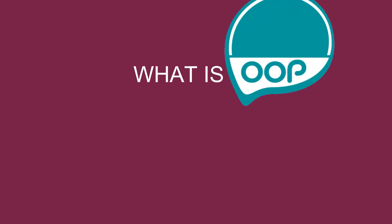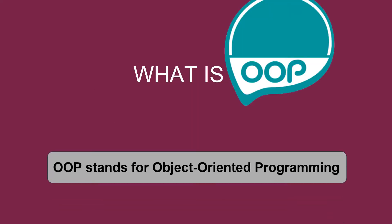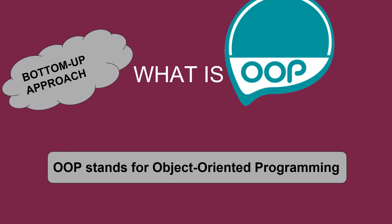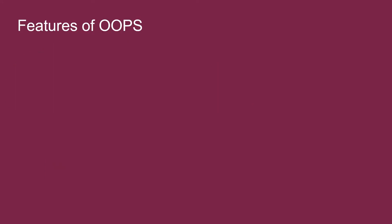Now, what is OOP? OOP stands for Object-Oriented Programming. It is designed to focus on data. Object-Oriented Programming follows bottom-up approach. There are mainly four features of Object-Oriented Programming.